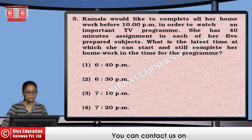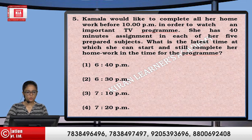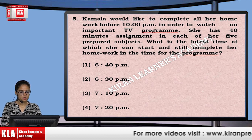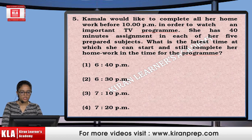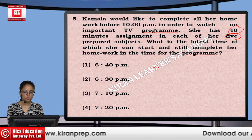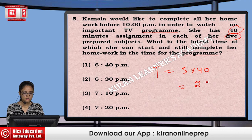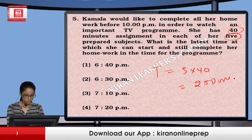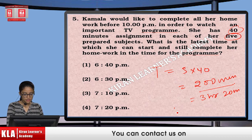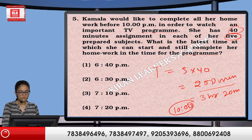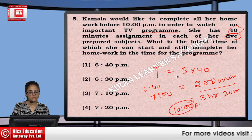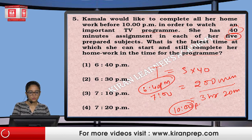Next: In order to watch an important TV program, she has 5 assignments of 40 minutes each in her prepared subjects. What is the latest time at which she can start and still complete her homework in time for the program? Total time needed is 5 × 40 = 200 minutes, which is 3 hours and 20 minutes. She has to complete by 10 PM, so counting back 3 hours 20 minutes, she must start by 6:40. That is option number 1.